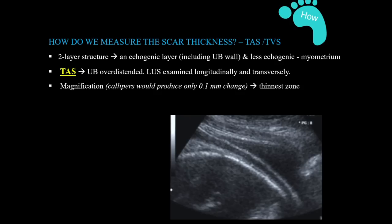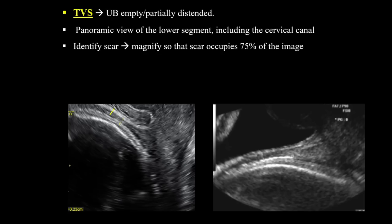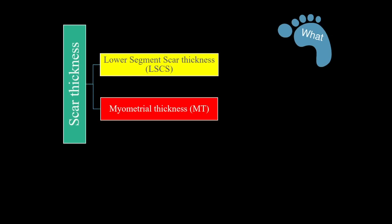When magnified, caliper placement should not cause a change of more than 0.1 millimeters, ensuring accuracy in calculating the thinnest zone and reducing error rate. For transvaginal scan, the bladder should be empty or partially distended. A large view with a midsagittal image including the cervix is taken. Once the lower segment is identified, it is magnified such that 75 percent of the image includes only the scar, again to reduce error when placing calipers.